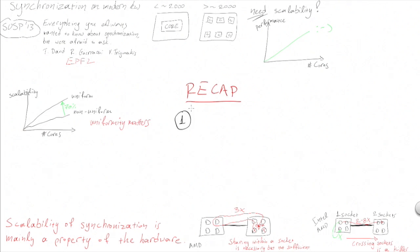To recap, we saw that on multi-sockets, crossing sockets is really problematic for scaling synchronization. The obvious solution of restraining sharing within a socket is not universal because the hardware might still induce expensive cross-socket traffic.